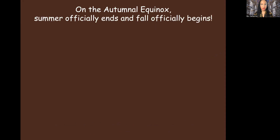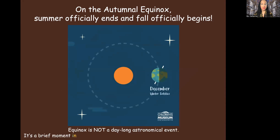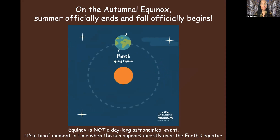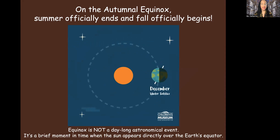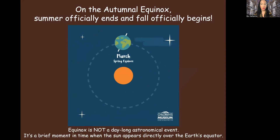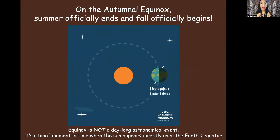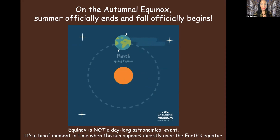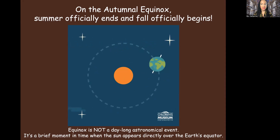On the autumnal equinox, summer officially ends and fall officially begins. Remember, equinox is not a day-long astronomical event. It's a brief moment in time when the sun appears directly over the Earth's equator. So just for fun, let's pronounce the word: astronomical. Astronomical. You try. Good job. Now let's try: autumnal equinox. Autumnal equinox. Now you try. Good job.